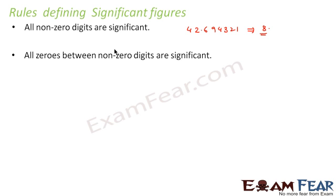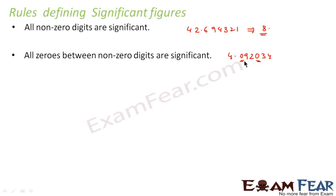The second rule: all zeros between non-zero digits are significant. For example, consider a number like 3,060,500 — here the zeros between the non-zero digits count. How many significant digits do we have? 1, 2, 3, 4, 5, 6, 7. So we have 7 significant digits here.